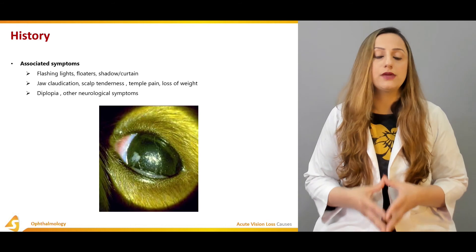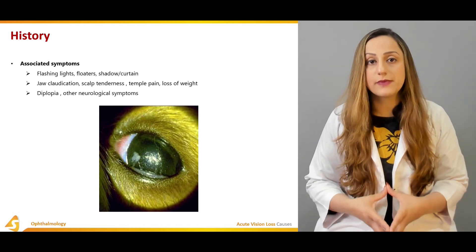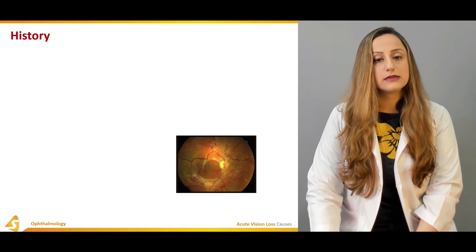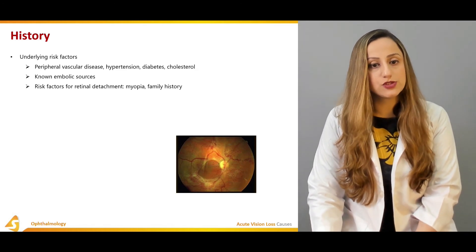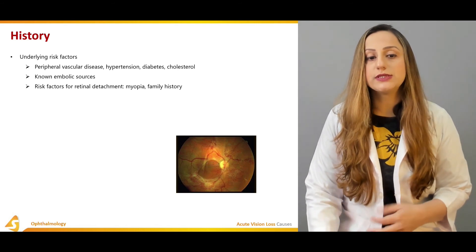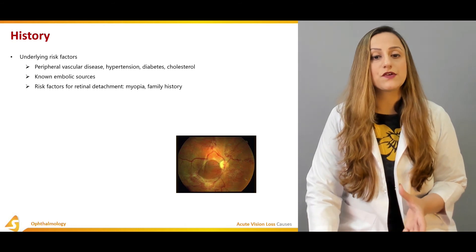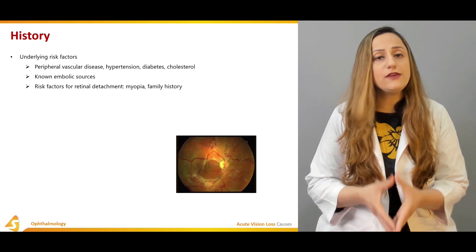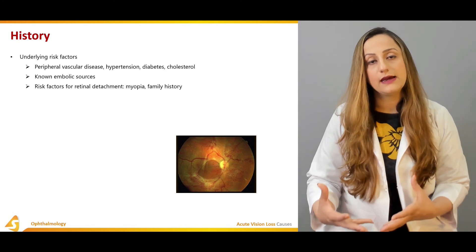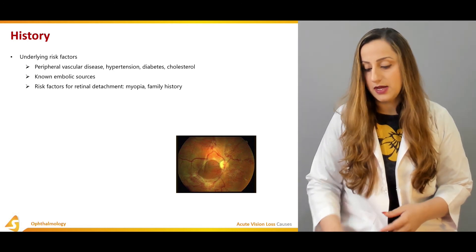Diplopia and other neurological symptoms should also be assessed. Understanding the patient's underlying risk factors is important — including peripheral vascular disease, hypertension, diabetes, and cholesterol. Knowing embolic sources and risk factors for retinal detachment, such as myopia and family history of retinal detachments, is also relevant, as retinal detachment has a significant genetic component.